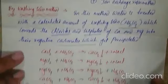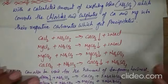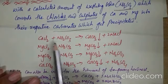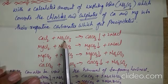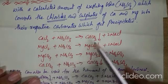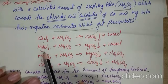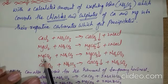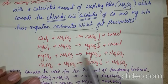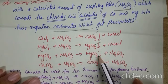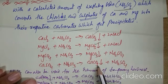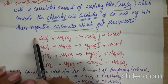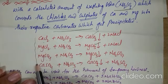See the reactions one by one. CaCl2 + Na2CO3 gives CaCO3 precipitate. MgCl2 + Na2CO3 gives MgCO3 precipitate. MgSO4 + Na2CO3 gives MgCO3 precipitate. Similarly, CaSO4 + Na2CO3 gives CaCO3 precipitate. These are the salts responsible for permanent hardness of the water.